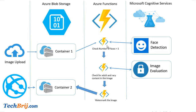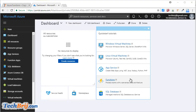We are validating that there must be only a single face in the image, so the face count should be one. If it is one, then it will call the Image Evaluation API to check for adult and racy content in the image. If the image is valid, then some branding text is added as a watermark and put on Container 2, which is connected to another web application where the image is going to be used.